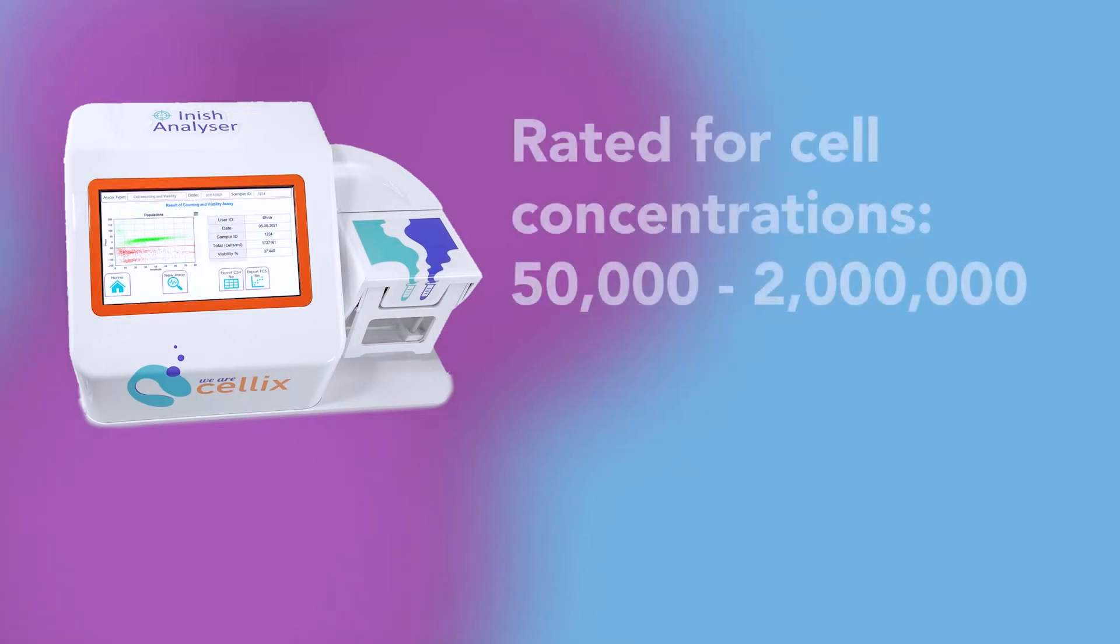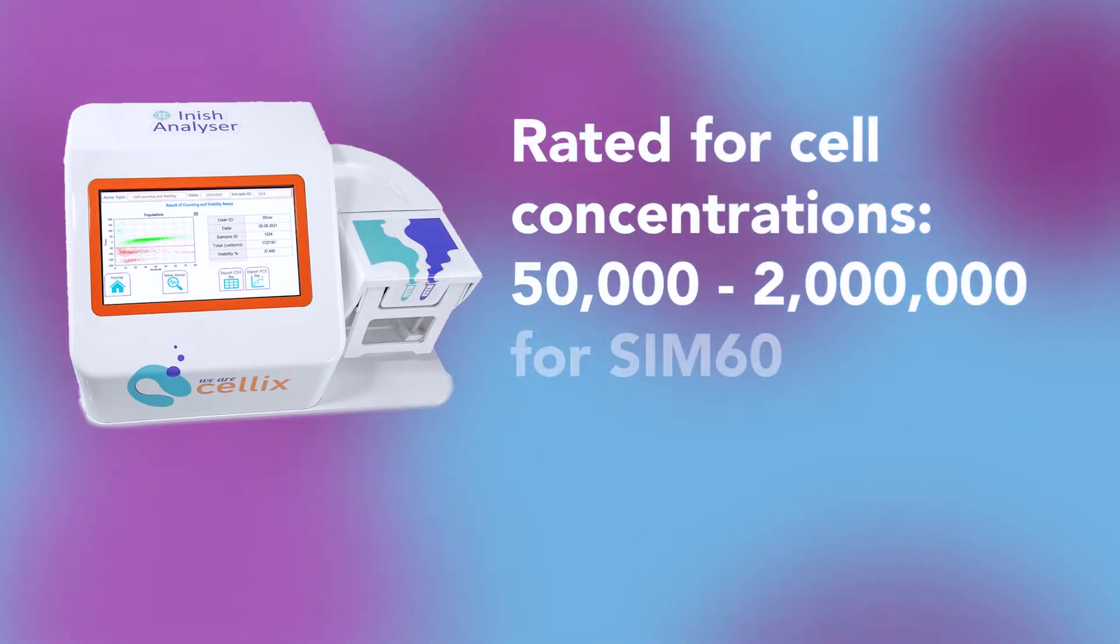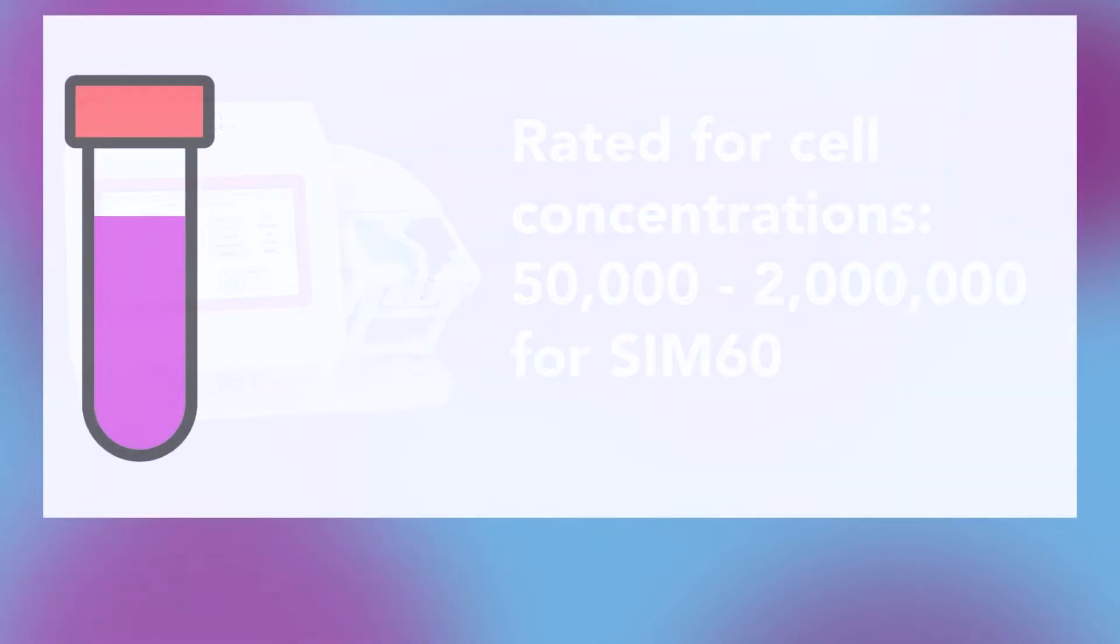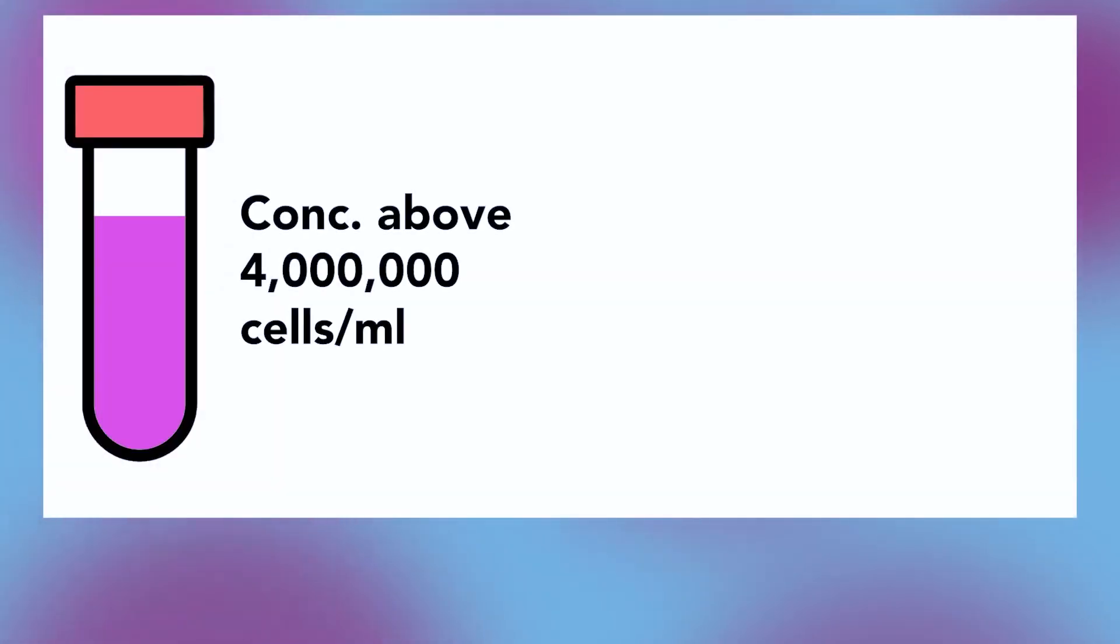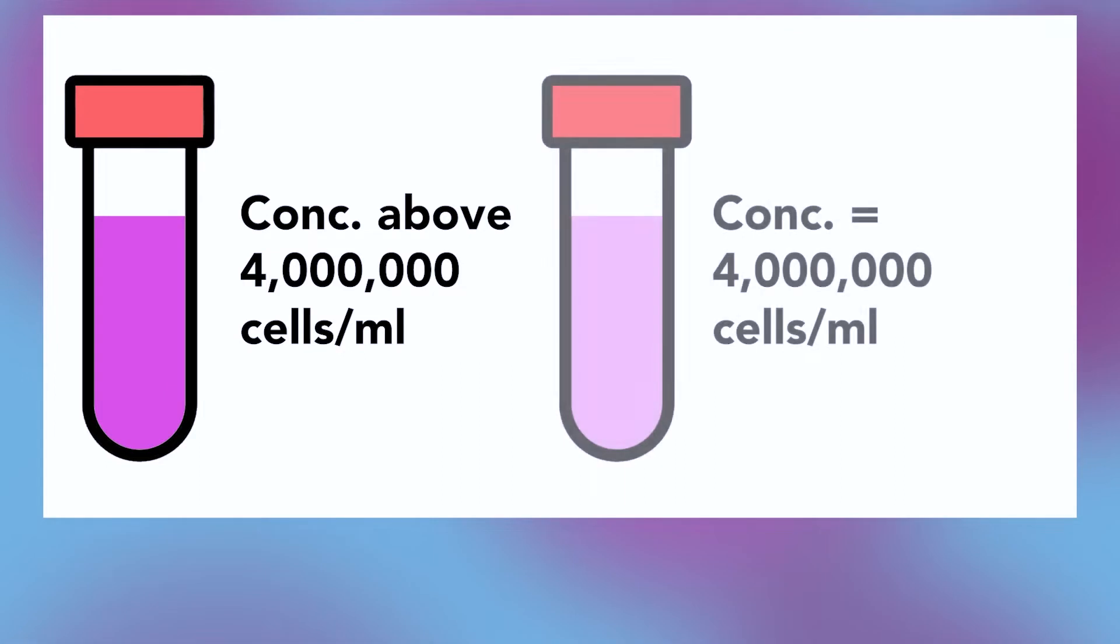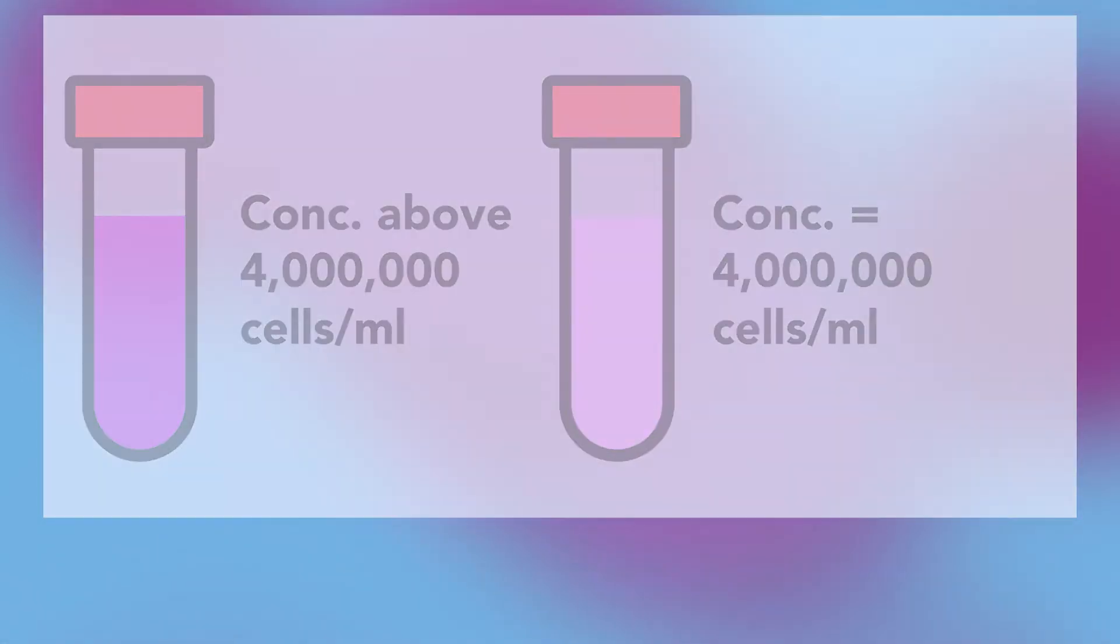The Inish analyzer is rated for cell concentrations between 50,000 and 2 million cells per milliliter for Sim60, so if your sample concentration is above 4 million cells per milliliter, dilute it down to 4 million cells per milliliter.